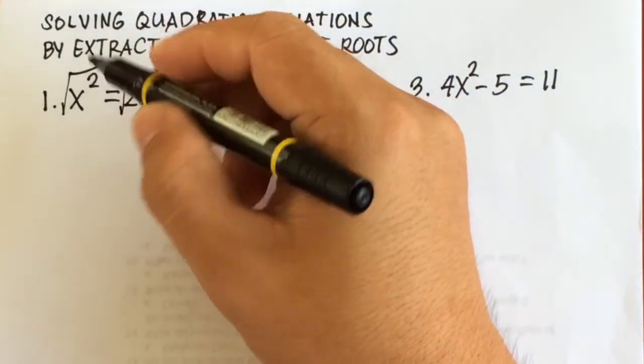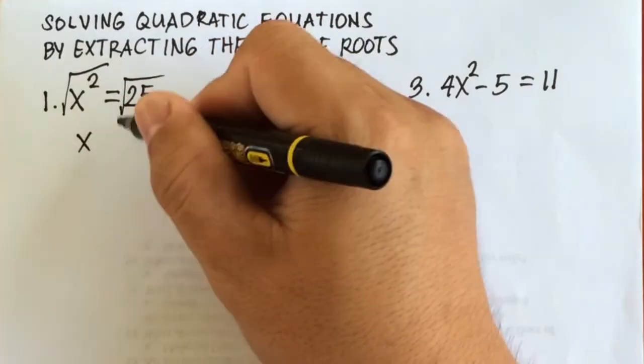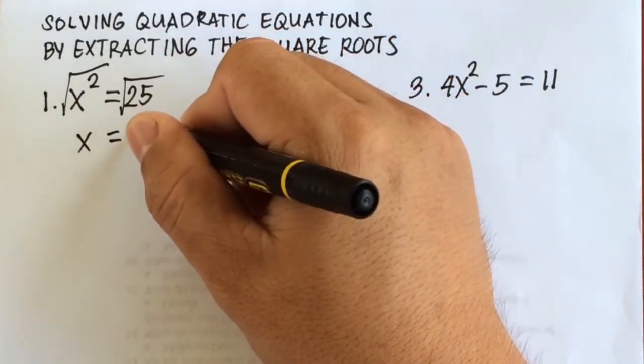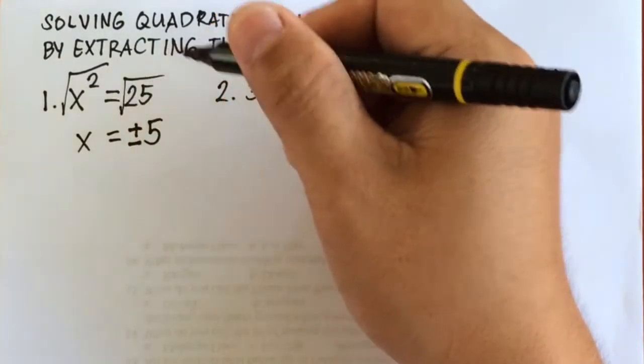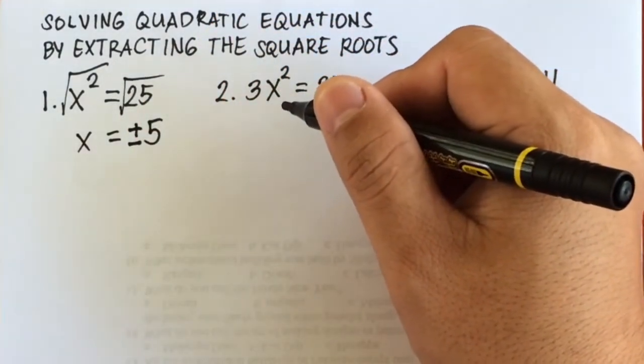Square root of x squared is equal to x. Square root of 25 is equal to positive negative 5. So, the answer for number 1 is x equals positive negative 5.